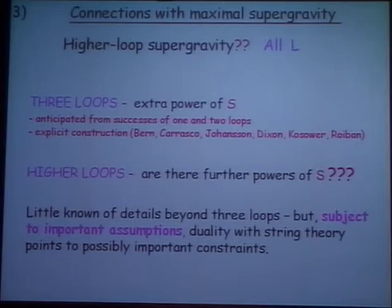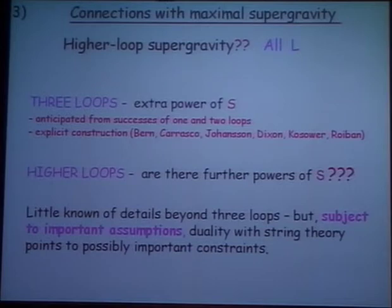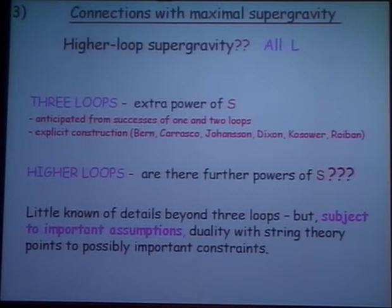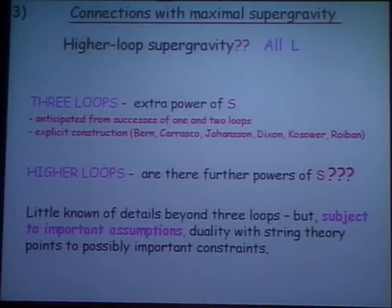So the last part of the talk is to do with the possible connections with supergravity in arbitrary dimensions, and that has to do with what happens beyond two loops. At one and two loops, things are very clean and you can do very detailed calculations. At three loops, we now have an expression, thanks to Bern, Dixon et al. last year, who had an explicit construction — so one could in principle repeat what I've just said. The important thing is that at three loops there's an extra power of S, and at high loops there may be further powers of S. The issue being addressed by people interested in whether supergravity is more finite than it might have been expected to be can be rephrased as: how many powers of S are there at any given loop? Because the more powers of S there are outside the integral, the more finite the integral.